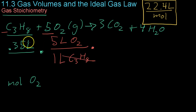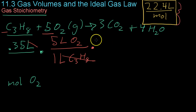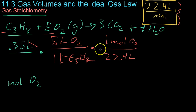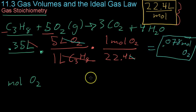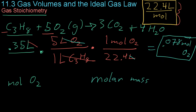After canceling units, to find the number of moles of oxygen, we use the conversion factor for moles to liters: for every 22.4 liters, you get one mole of oxygen. Canceling those units, you end up with 0.078 moles of oxygen. You could then use oxygen's molar mass to find how many grams of oxygen you have — a simple calculation we've covered in previous videos.